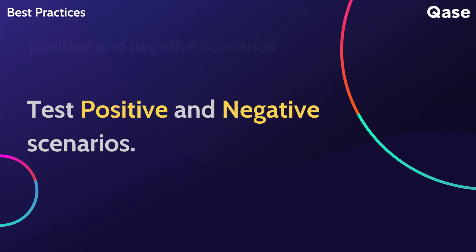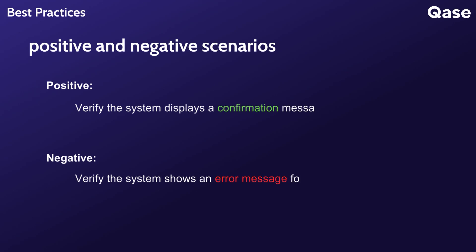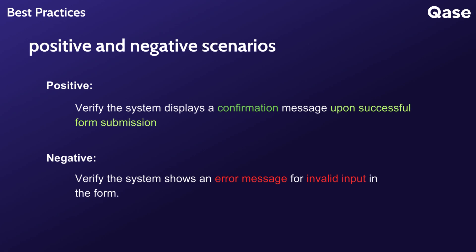Test both positive and negative scenarios. Include both to validate expected behavior and error handling. Positive scenarios validate that the system works as expected, while negative scenarios test how the system handles unexpected inputs or errors. For instance, a positive example would be 'verify that the system displays a confirmation message on successful form submission,' and for the negative, 'verify that the system shows an error message for invalid input in the form.'